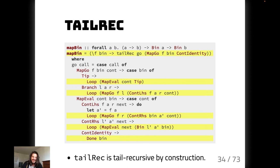Instead of using direct tail recursion with a worker `go`, you can use `tailRec`, the `tailRec` function from the standard library. `tailRec` makes our worker correct by construction — we can't accidentally use `go` wrong. It's always stack safe because we have to return an explicit data type at the end of each iteration, making it easier to keep things straightforward. It might be a little bit slower, but it's nice to get that sort of guarantee.